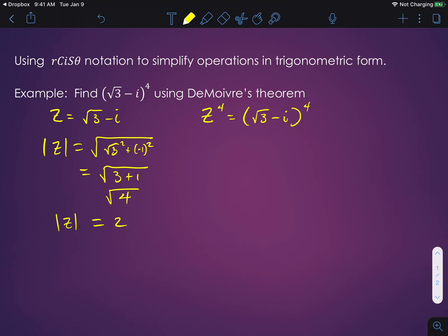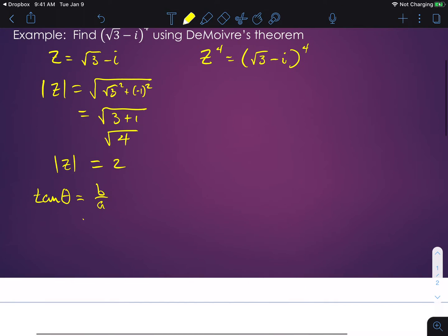And then we also have to find what theta is. Well, theta, if you remember, is found by taking the tangent of theta and saying that that is b over a. So in our case right here, we're talking about -1 over √3.